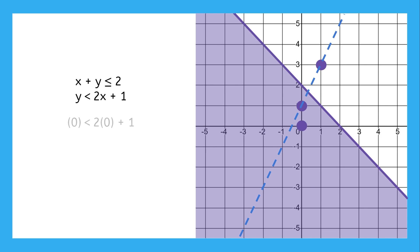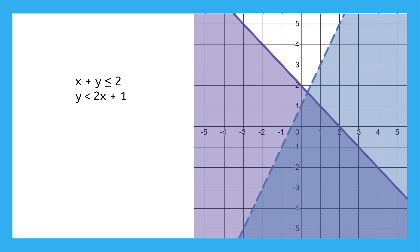Finally, we can use (0,0) as a test point, and we get the true statement, 0 is less than 1. So we shade the side with (0,0).